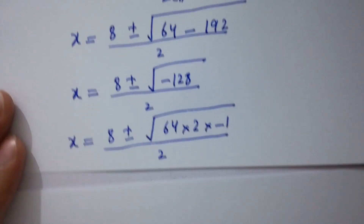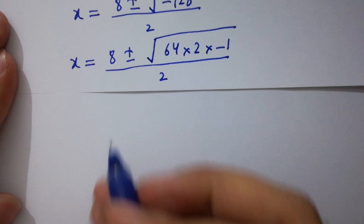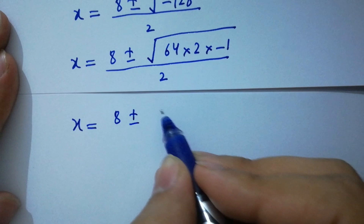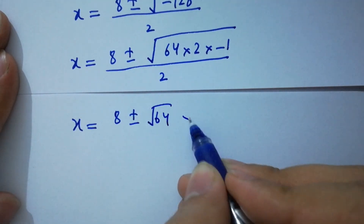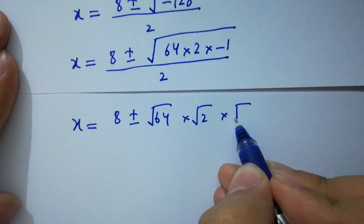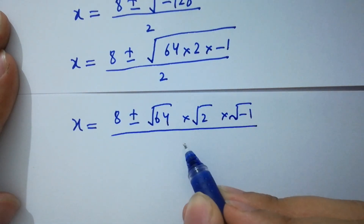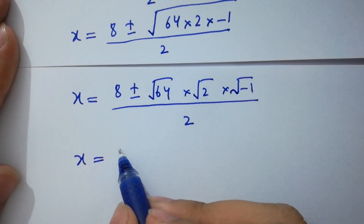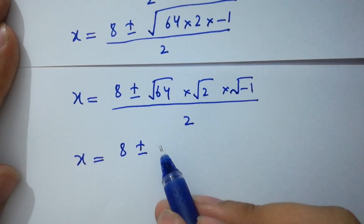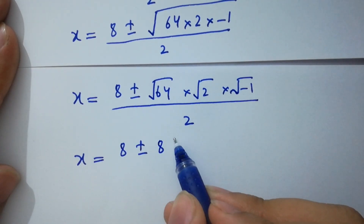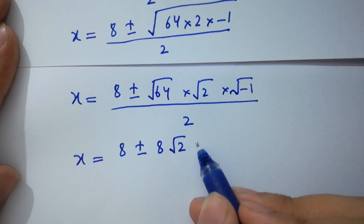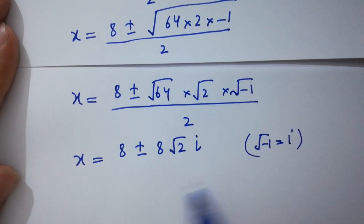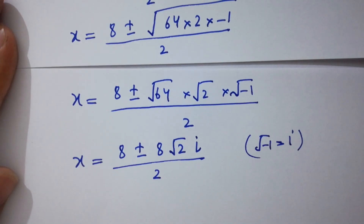We can write minus 128 as 64 times 2 times minus 1. So x equal to 8 plus or minus square root of 64 times square root of 2 times square root of minus 1, over 2. Since square root of 64 is 8 and square root of minus 1 is i from complex numbers, we have x equal to 8 plus or minus 8 times square root of 2 times i, over 2.